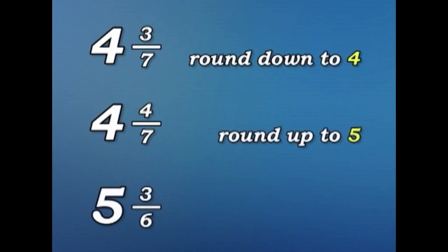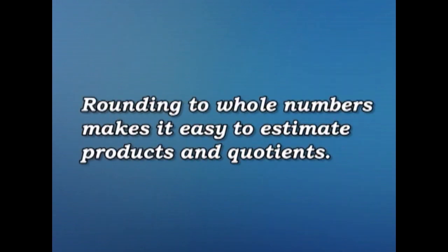And five and three sixths. Three sixths is the same as a half. So, we have to round up to six. Rounding to whole numbers makes it easy to estimate products and quotients.